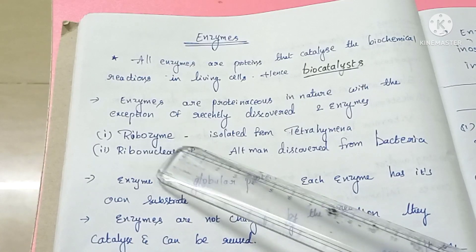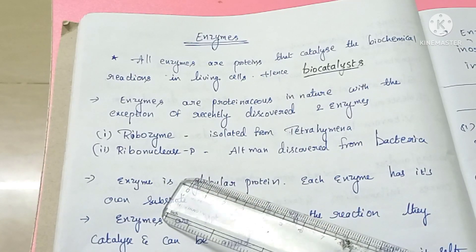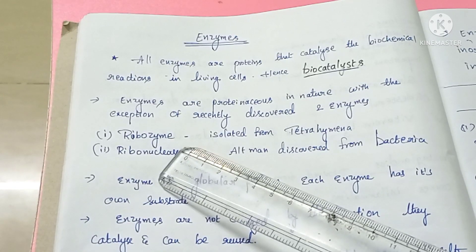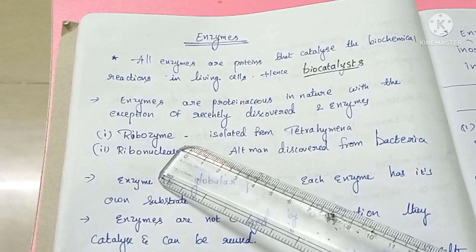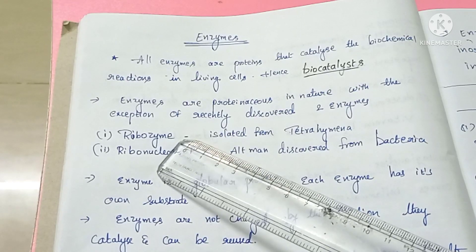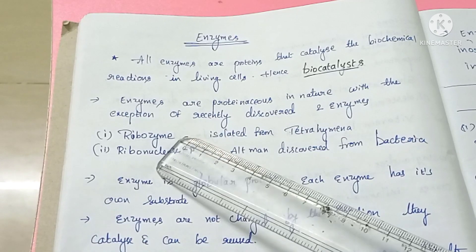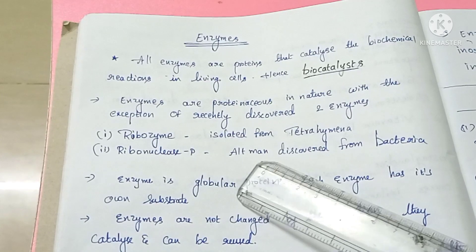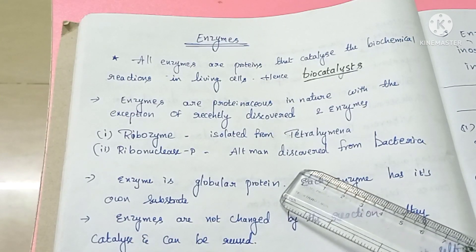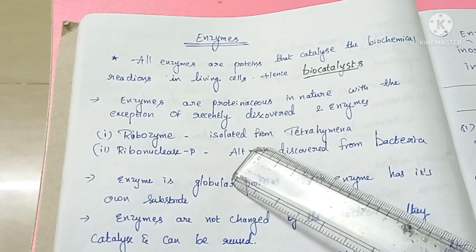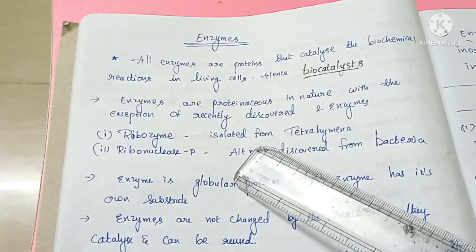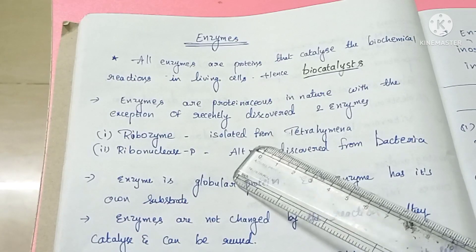The two exceptions are ribozyme and ribonuclease P. Ribozyme was first isolated from Tetrahymena. Ribozyme is a nucleic acid — specifically RNA — that behaves like an enzyme. Ribonuclease P was discovered from bacteria and is also a type of ribonuclease enzyme that cleaves RNA.